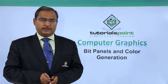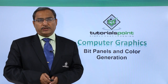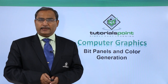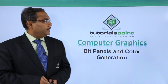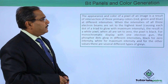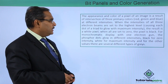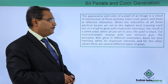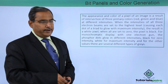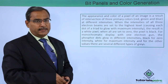Bit panels and color generation. In this video, we shall discuss how colorful images are getting displayed on the screen. The appearance and the color of a pixel of an image is a result of intersection of three primary colors — red, green, and blue — at different intensities.